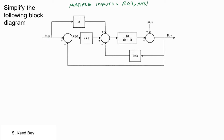In this video we will simplify a block diagram representing a control system with two inputs. The first input is the set point or the reference signal R, and the second input is the measurement noise N.